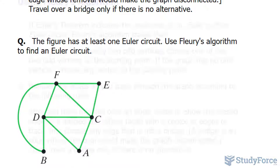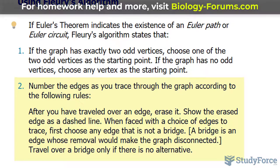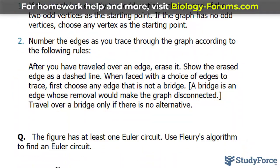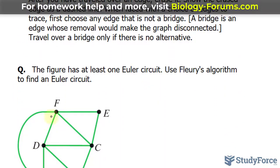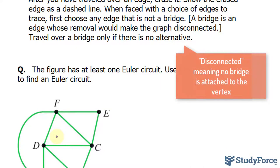So when doing this example, we can start anywhere. The second part of this algorithm states to number the edges as you trace through the graph according to the following rules. So after you have traveled over an edge, erase it. And by the way, these lines are called edges. Show the erased edge as a dashed line. When faced with a choice of edges to trace, first choose any edge that is not a bridge. A bridge is an edge whose removal would make the graph disconnected.